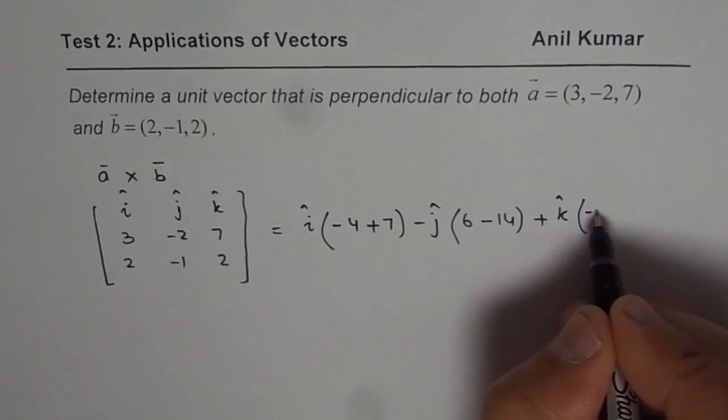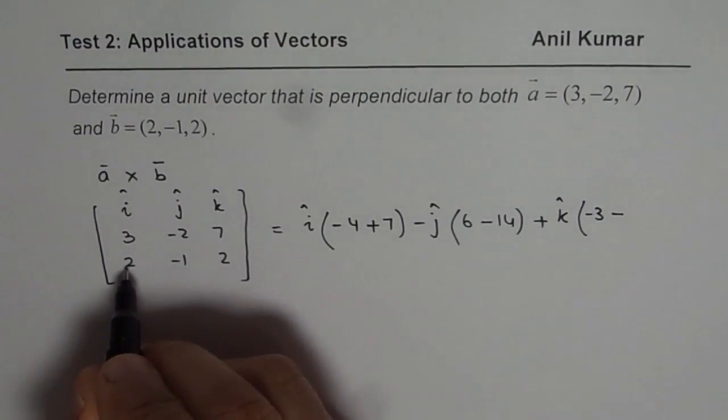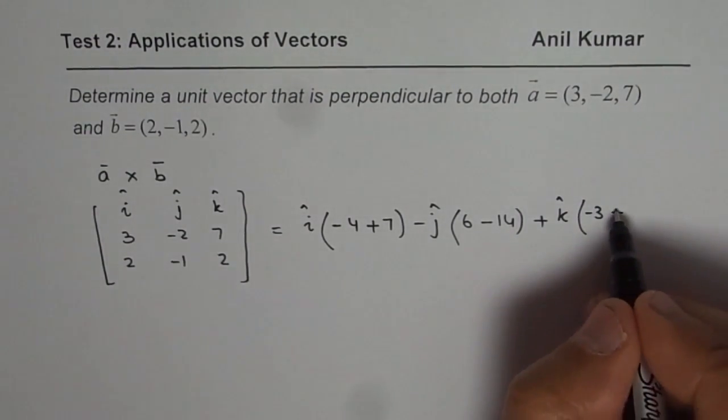Which is 3 times -1 as -3, minus 2 times 2, which is -4. So that makes it plus.